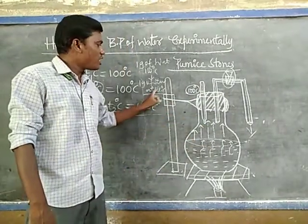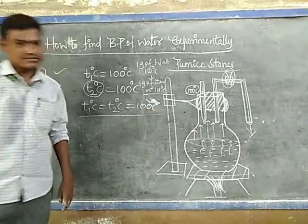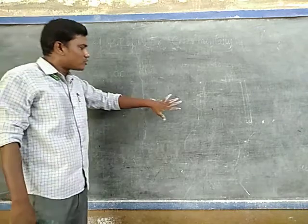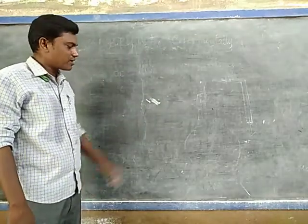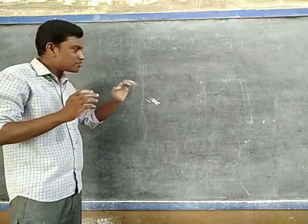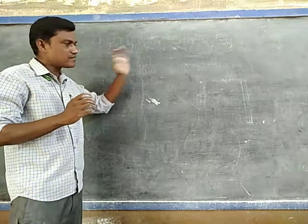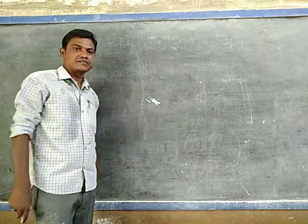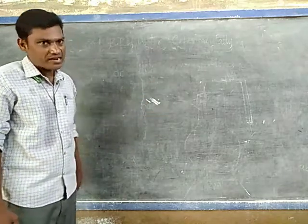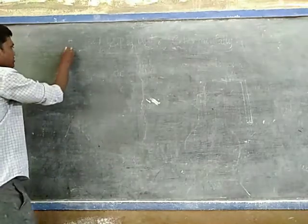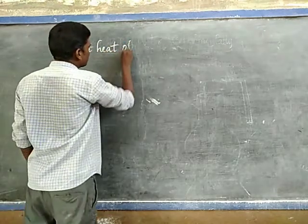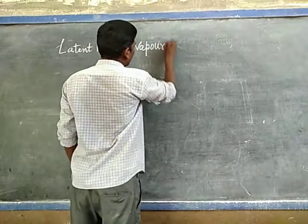So, to find the boiling point of water experimentally, we observe that up to a certain time we continuously supply heat energy but there is no rise or change in the thermometer reading. What about the heat energy being supplied during that time? To understand that concept, scientists introduced another concept: the latent heat of vaporization.